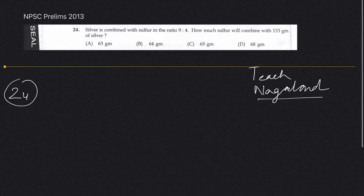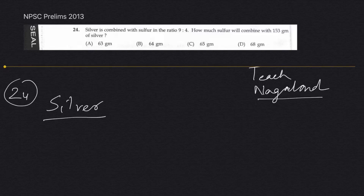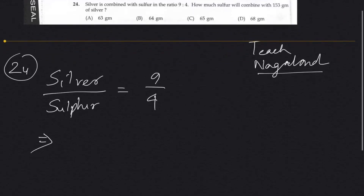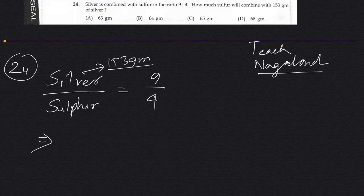Silver is combined with sulfur in the ratio 9 is to 4. How much sulfur will combine with 153 grams of silver? Silver: 153 grams. So, sulfur — how much? 153 divided by sulfur, ratio 9 to 4.